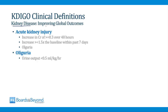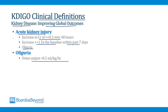KDIGO stands for Kidney Disease Improving Global Outcomes, a group that recently came up with clinical definitions for various features of acute kidney injury. According to this group, the definition of acute kidney injury is one of three things: either an increase in creatinine more than 0.3 over 48 hours, or an increase in creatinine more than 1.5 times the baseline creatinine within the past seven days, or the presence of oliguria. The definition of oliguria is urine output less than 0.5 milligrams per kilogram per hour.